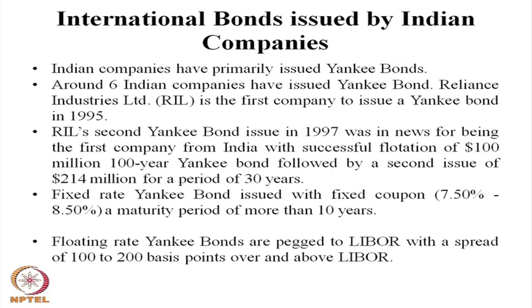Indian companies have primarily issued Yankee bonds denominated in US dollars. Around 6 companies have recently issued Yankee bonds. Reliance was the first Indian company to issue a Yankee bond in 1995, followed by a second Yankee bond issue in 1997 — first a 100-year bond and then a 240 million dollar 30-year bond. Fixed-rate Yankee bonds were issued with a fixed coupon and maturity period of more than 10 years. Floating rate bonds linked to LIBOR are also issued by Indian companies, with benchmarks generally at LIBOR plus 150 to 200 basis points.